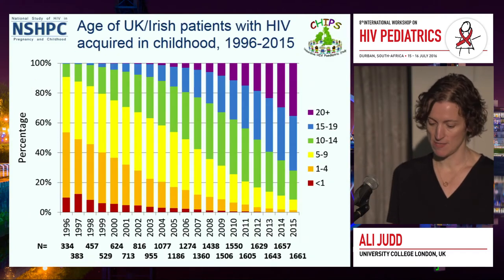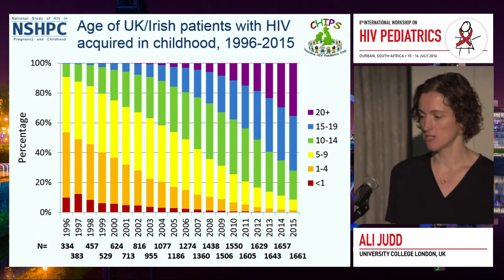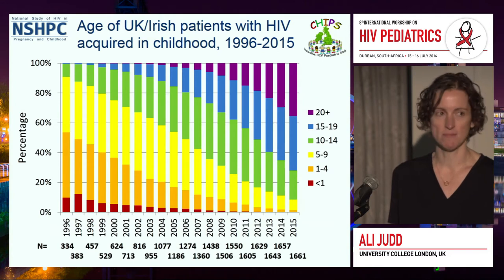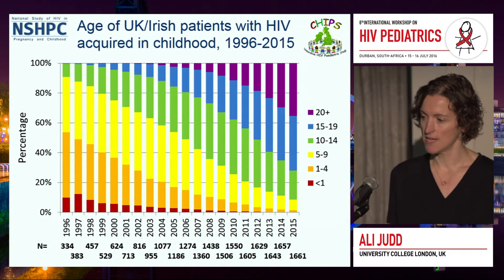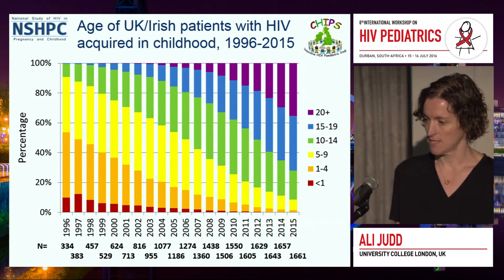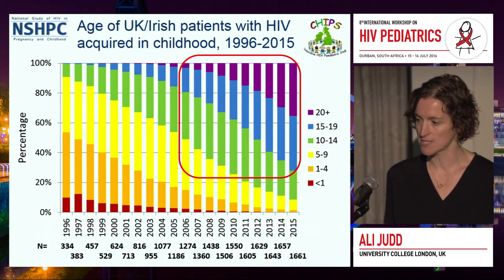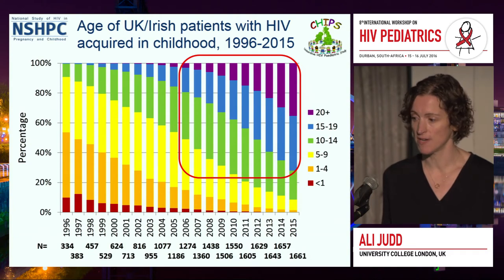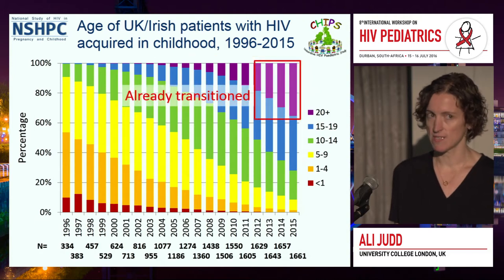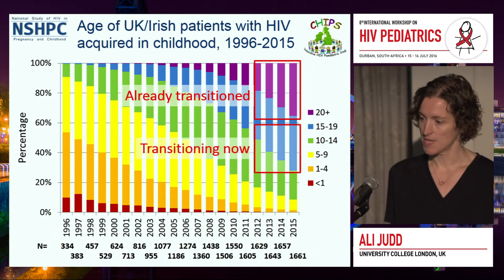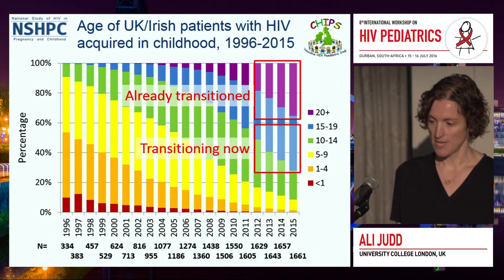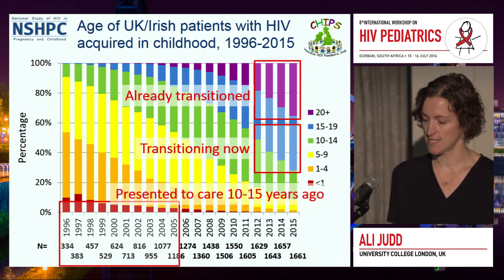Moving on to the UK specifically, this graph shows data from the CHIPS cohort, a national cohort of children and young people with HIV in the UK and Ireland. The graph shows the age at last follow-up, with the x-axis showing year of last follow-up and different colours showing different age bands. The proportion of children and young people aged 15 and above has increased substantially in recent years. A third of our cohort have already transitioned to adult care, a third are transitioning now and in the next five years, and many presented to care 10 to 15 years ago with very different treatment histories to children in low-resource settings.